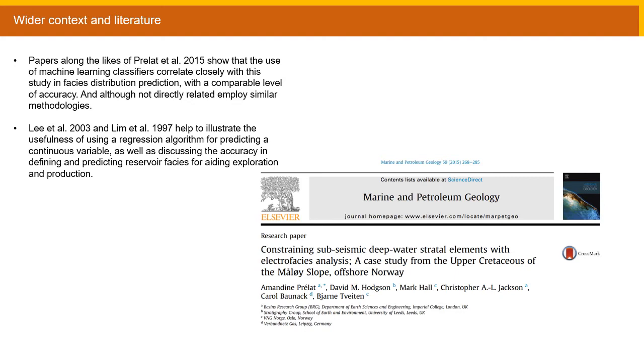Before delving into the application of machine learning in this project it's important to consider that although it's a relatively unutilized tool in geoscience it is gaining traction which helps to justify the usefulness of this project. Papers such as Prelat et al 2015 employ similar methodologies and comparable aims in their use of machine learning and neural networks. They help to validate that classifiers can be used in geoscience accurately. Lee 2003 and Lim 1997 also illustrate the usefulness of machine learning in industry as a cost-effective alternative to current techniques.